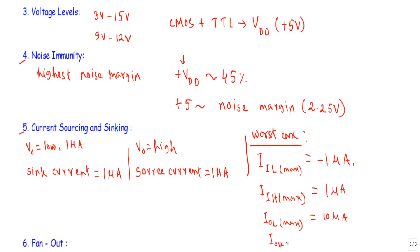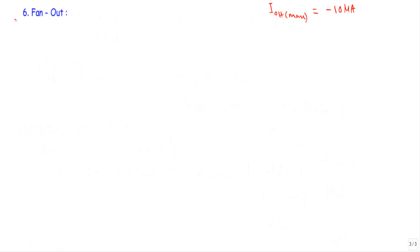The last point is fan out. The fan out of CMOS logic circuit depends on the type of load being connected, and the fan out of the CMOS logic circuit could be greater than 50. That means we can connect more than 50 logic gates of CMOS logic family at the output terminal of a CMOS logic. Ok that's it, thank you.